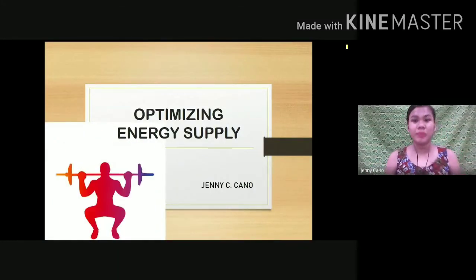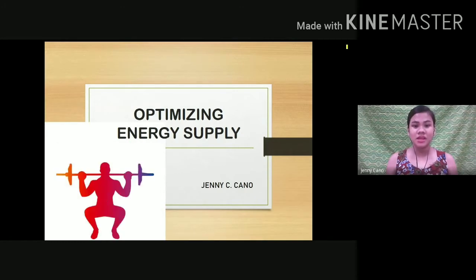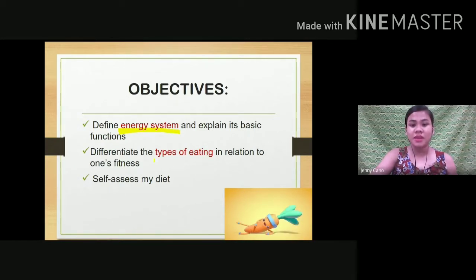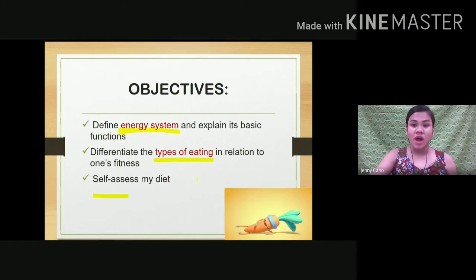Hi class, hi everyone. I hope everyone is okay and doing well. Last meeting we already discussed exercise and physical activity, so now we're going to talk about optimizing energy supply. Our objectives for today are: define energy systems and explain their basic functions, identify the types of energy systems in our body, differentiate types of eating in relation to fitness, and assess your own diet.